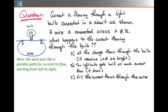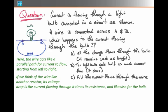In this case, we have to think of the wire as acting like another parallel path for current to follow, starting from left to right. If we think of the wire like another resistor, its voltage drop is the current flowing through the wire times its resistance. Likewise, the voltage drop through the light bulb is its current flow times its resistance.